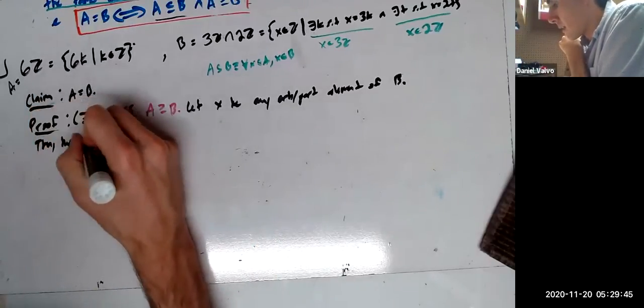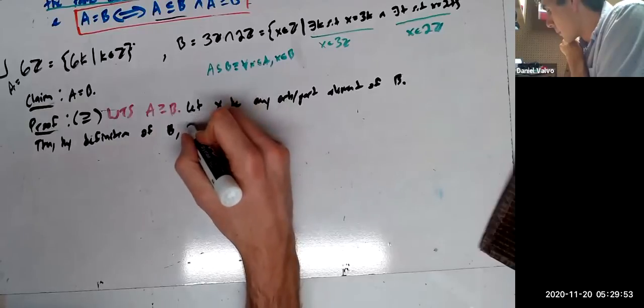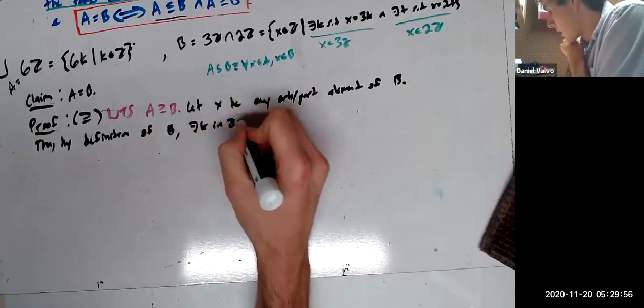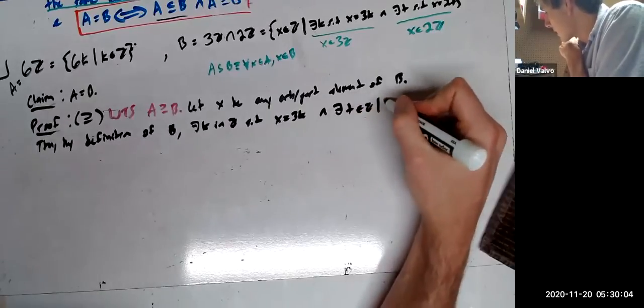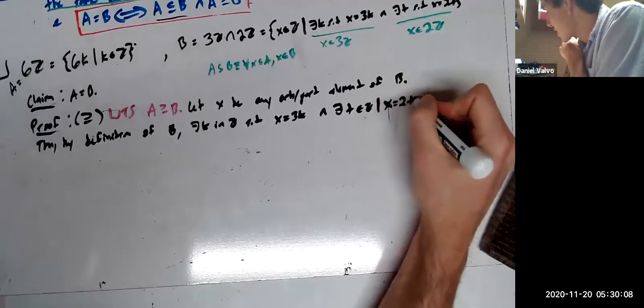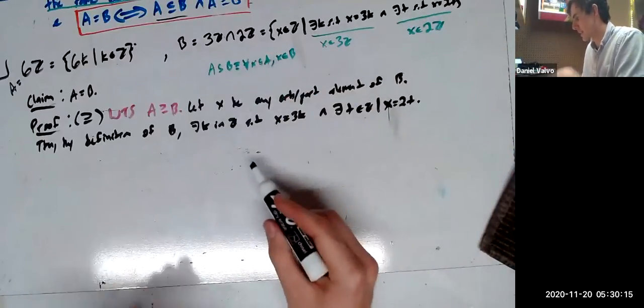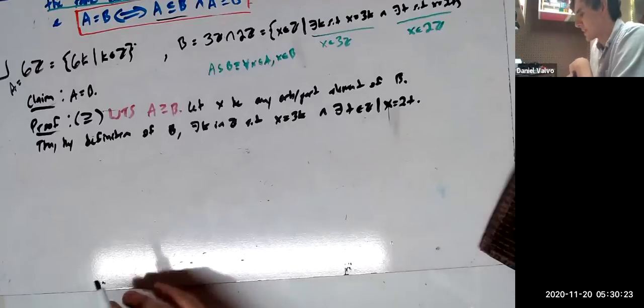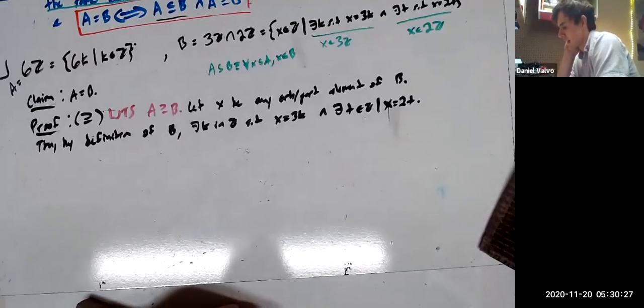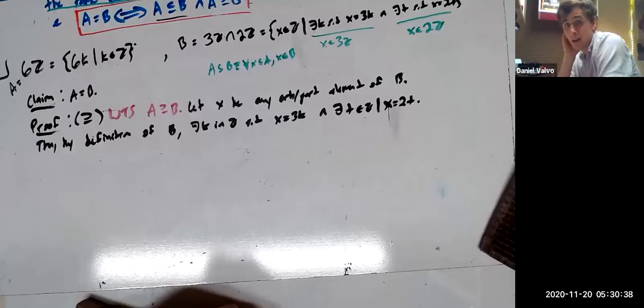Then, by definition of B, there exists a k in Z such that x equals 3k. And there exists a t in Z such that x equals 2t. And this is literally by definition, right? X is the set of all things that satisfy this. So, if x is in B, well, then it looks like this. All right. Now we have the slightly harder task of showing that if x equals 3k and x equals 2t, x has got to equal, 6 times something. And here's where I will take over. Because this actually uses that pretty interesting thing that we proved before. But I want to expect you guys to pull this out of your, notebook.